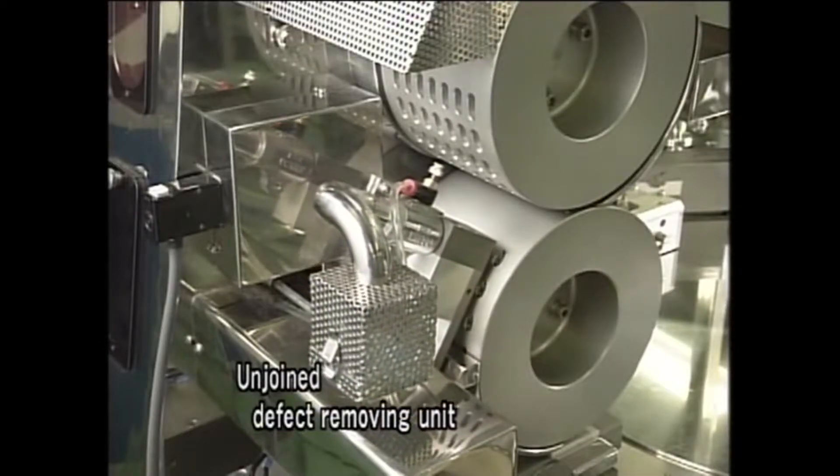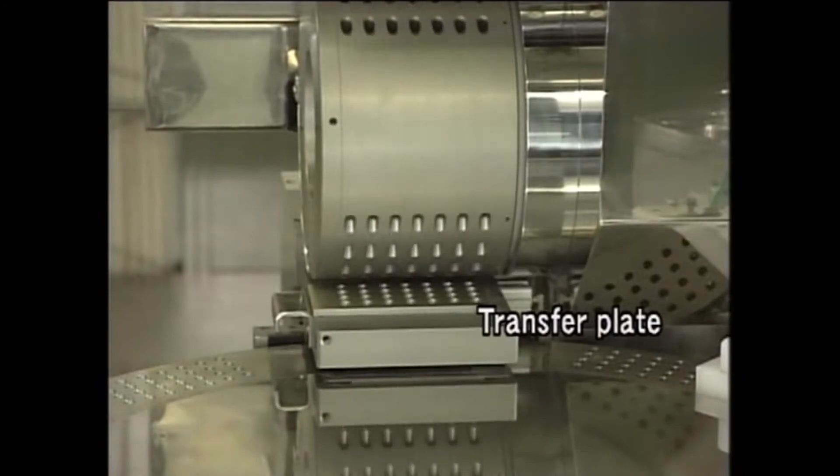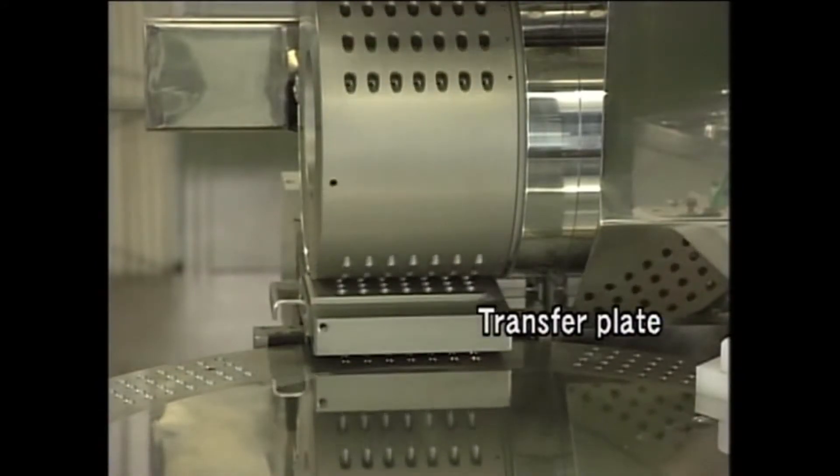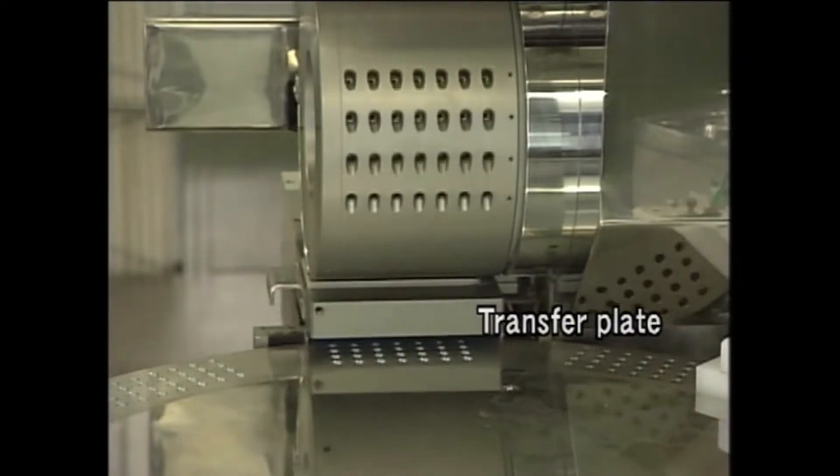In the case of unjoined product being detected, the product will be automatically removed by the transporting roller and fed into the capped disc intermittently through the transfer plate. At the same time, the cap and body will be separated.